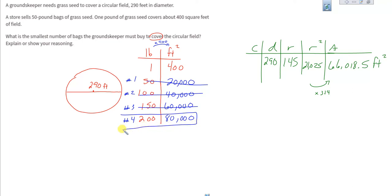And so we would have to buy four bags. It says what is the smallest number of bags? Well three would be nice but we can't cover the field. So we're going to write, explain or show we've kind of shown our work here. We would need to purchase